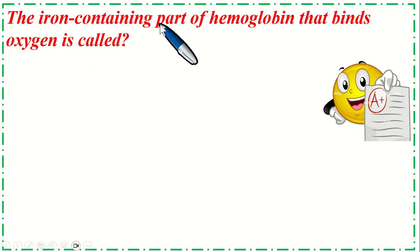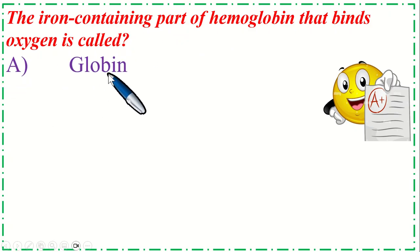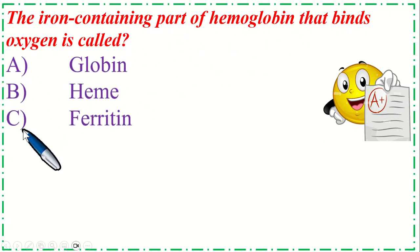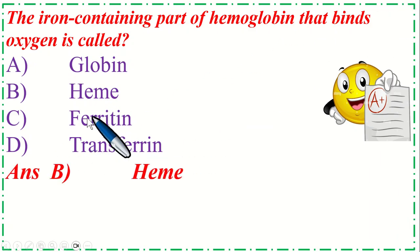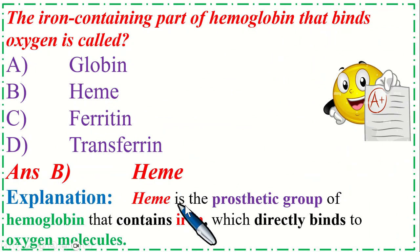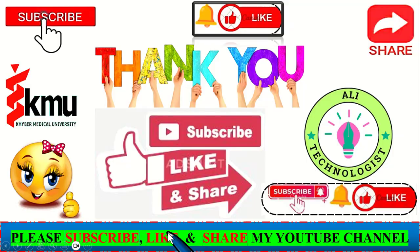The iron-containing part of hemoglobin that binds oxygen is called: Option A: Globin, B: Heme, C: Ferritin, and Option D: Transferrin. The correct option is B, Heme. Heme is the prosthetic group of hemoglobin that contains iron, which directly binds to oxygen molecules.